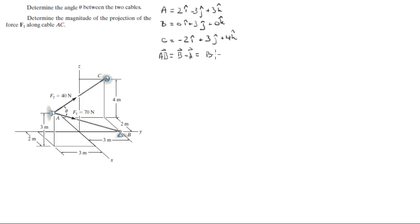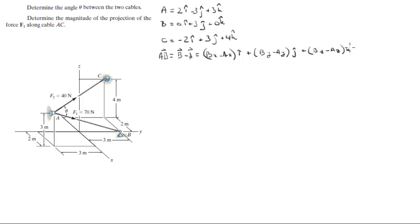That means it's (BX minus AX)i plus (BY minus AY)j plus (BZ minus AZ)k. When you plug in the numbers for these two vectors, you get that this vector is equal to negative 2i plus 6j minus 3k.